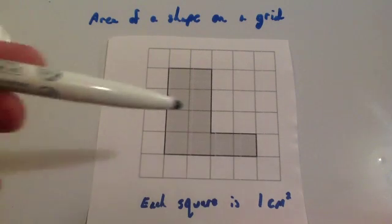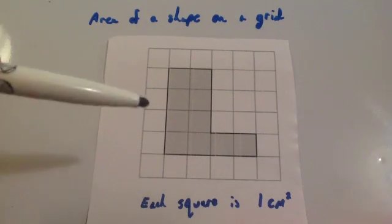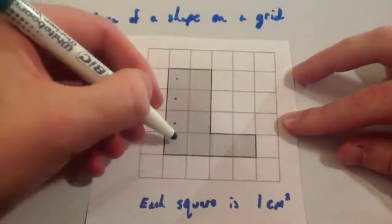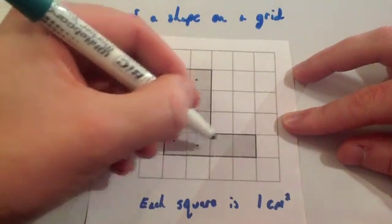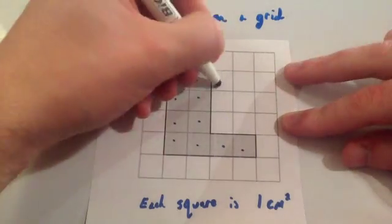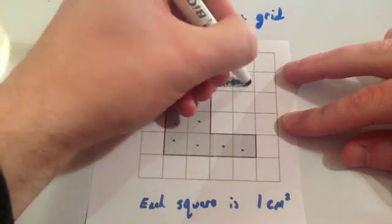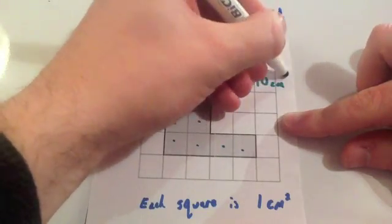To find the area of a shape on a grid, simply count how many squares there are. For instance here, there's one, two, three, four, five, six, seven, eight, nine, ten. So the area equals ten centimeters squared.